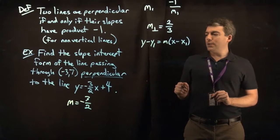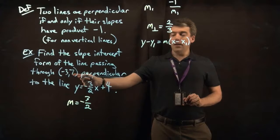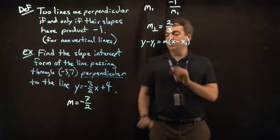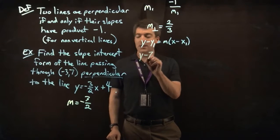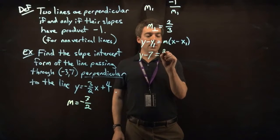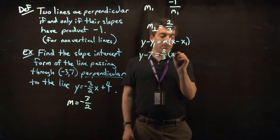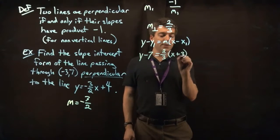Slope, we want 2 thirds. x1, y1, it's going to be x1 will be negative 3, and y1 will be 7. Let's plug those in. y minus 7 equals slope 2 thirds times x minus negative 3, that would be x plus 3.